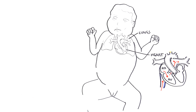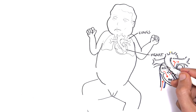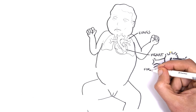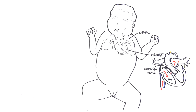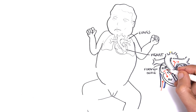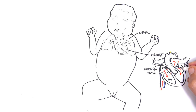However, in the fetal circulation, there is actually an anatomical opening — a hole — called the foramen ovale, which is the connection between the right atrium and the left atrium. And so, when blood flows from the right atrium to the right ventricle, blood will also flow from the right atrium to the left atrium.